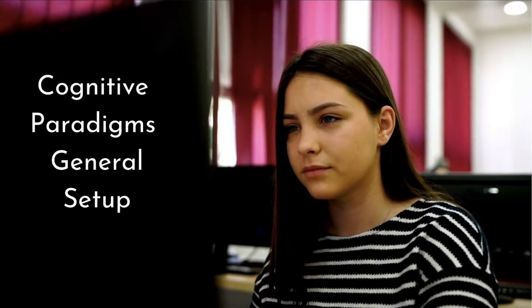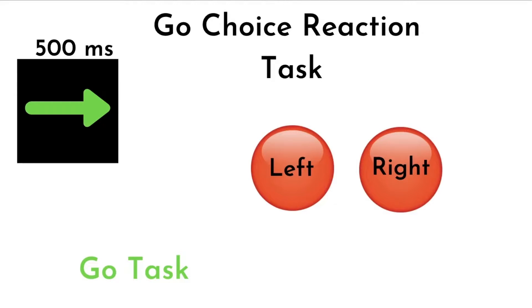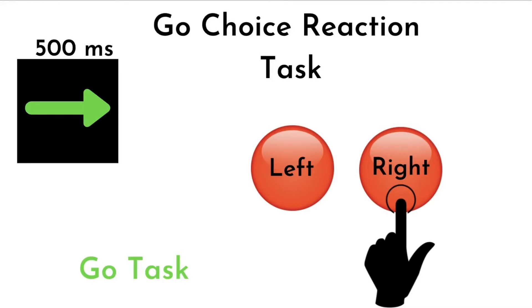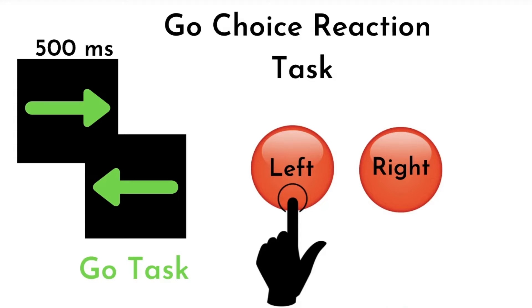In the Go Choice Reaction Task, also referred to as the primary task, participants first see a Go cue or stimulus. In this schematic, the Go cue is a green arrow — a typically used Go cue, though others may be used depending on the research question. Once the Go cue appears, the participant has to press a button on the keyboard based on the appropriate direction of the arrow. Once the response is recorded, the participant proceeds to the next trial and the Go Task continues.